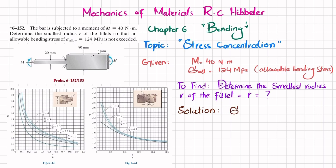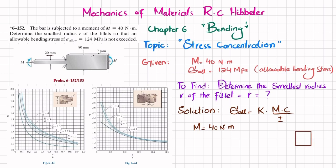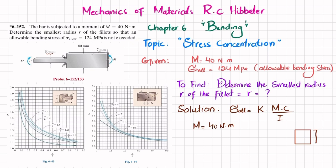The allowable bending stress for this stress concentration is equal to k times mc divided by I. M is the moment, which is 40 newton-meters. The stress concentration will be maximum in the smaller region, so we take the cross-sectional area of that portion. The height there is 20 millimeters and the thickness is 7 millimeters.